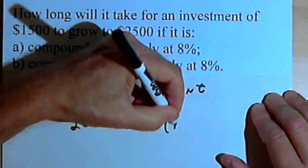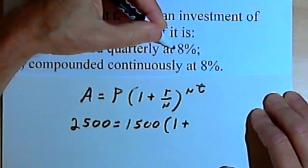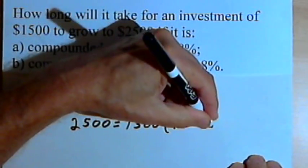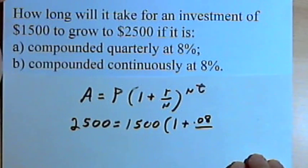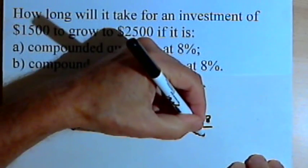We're going to multiply that by 1 plus r. So r is 8%, that's the rate. Write that as a decimal point, 0.08 divided by n, which is the number of compounding periods each year. This is compounded quarterly, so n would equal 4.